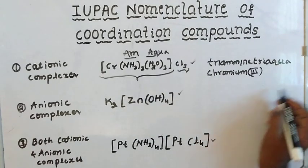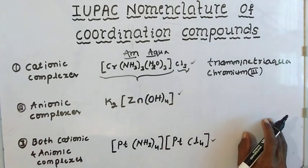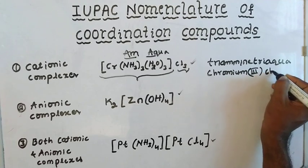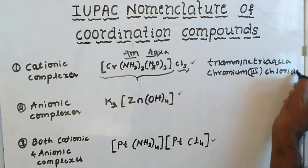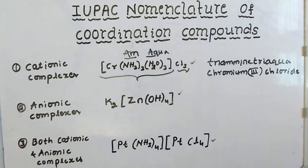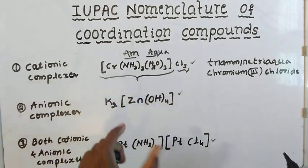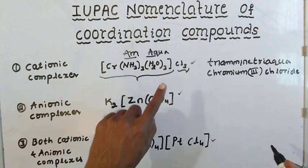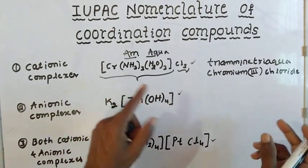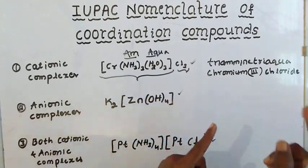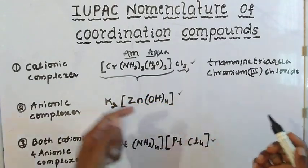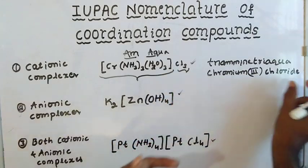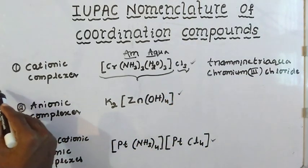Next, the anion is chloride. For a cationic complex with more than one type of ligand, name ligands in alphabetical order, then the metal with its oxidation state in Roman numerals, then the anion.